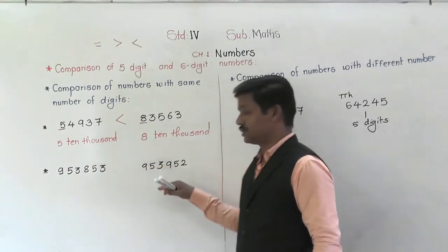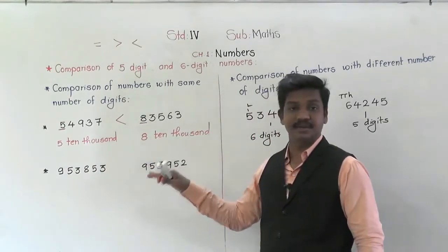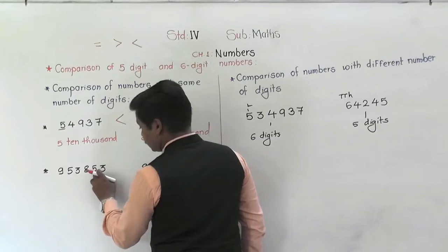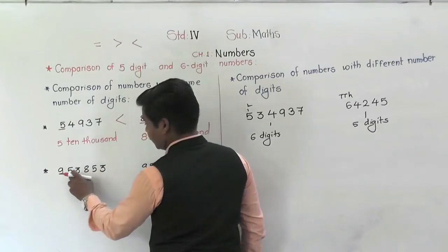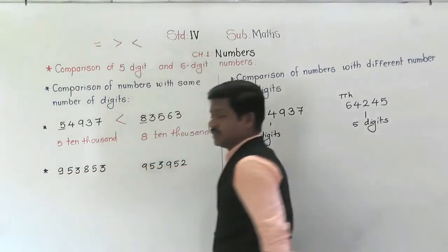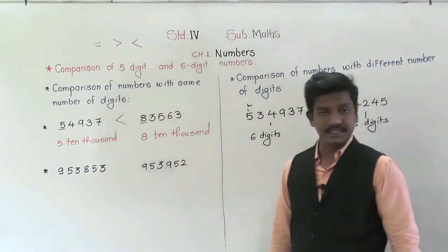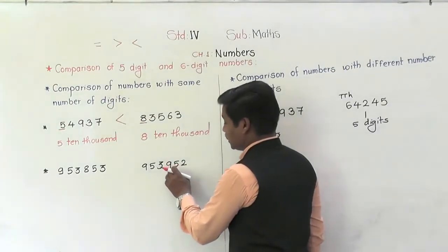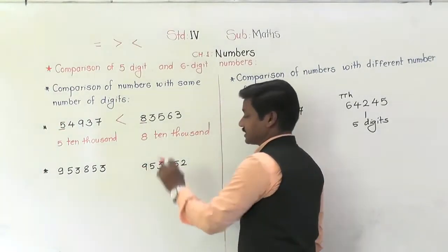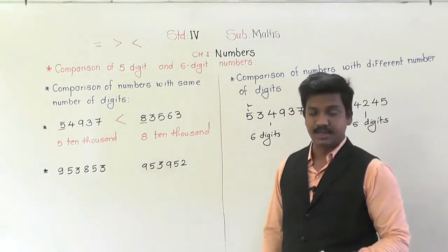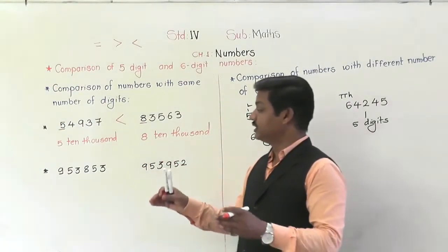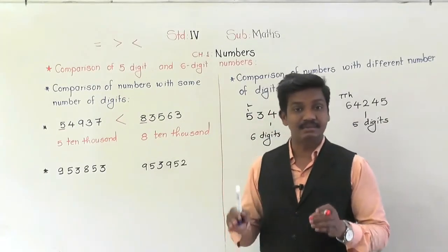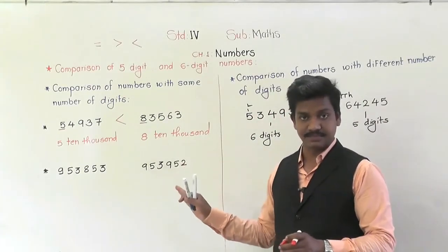Let's take another example with two six-digit numbers. In the first number there are 6 digits, and in the second number also 6 digits. Both numbers have the same number of digits, so we check their digits from the left side.